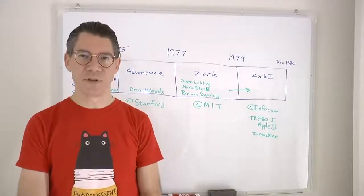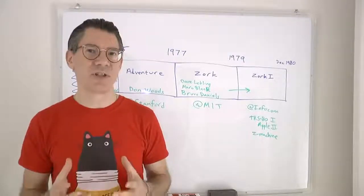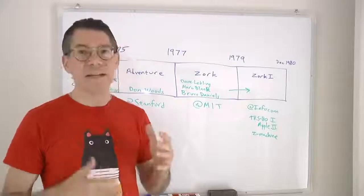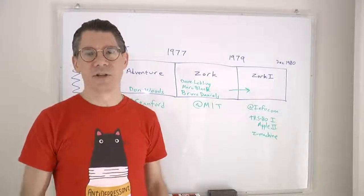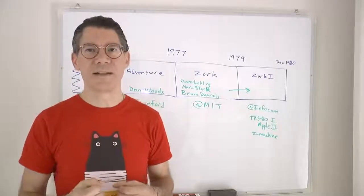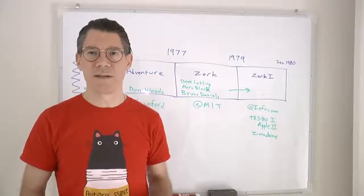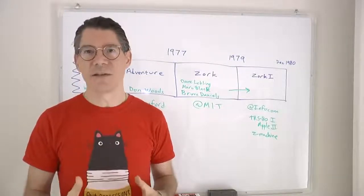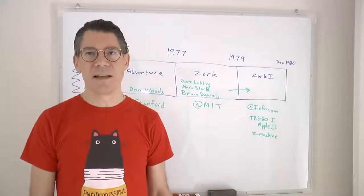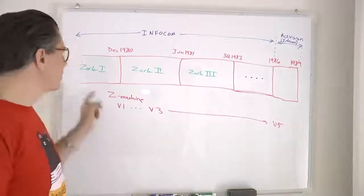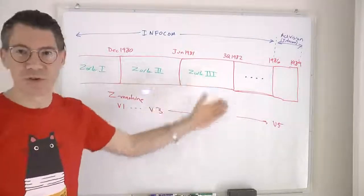The Z-Machine was the virtual machine they wrote the game for, and ZIP was an interpretation program because it took the actual game — written in Z-Machine code, or Z-code — and converted it into instructions the actual computer could understand. In this way, they could write the game itself once, and any time they wanted to release the game for a new machine, all they had to do was rewrite the ZIP, which involved simply executing the instruction set of the Z-code. Zork 1 came out in December 1980, and it was a smashing success.